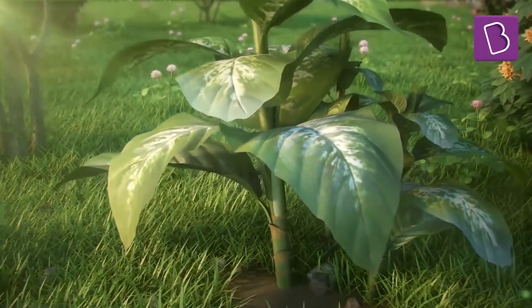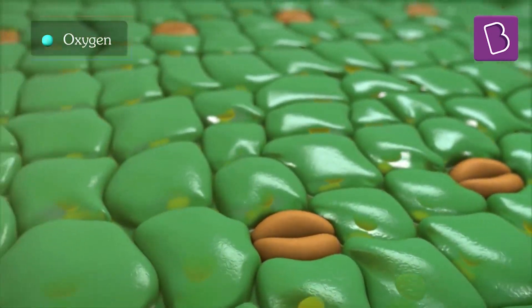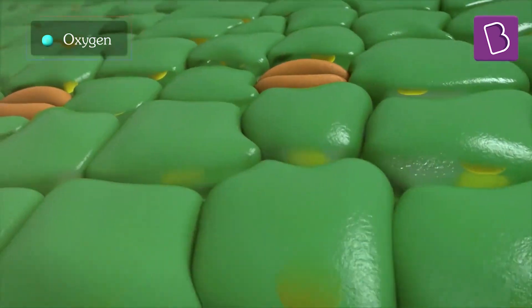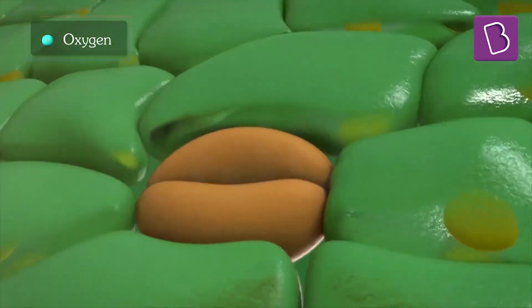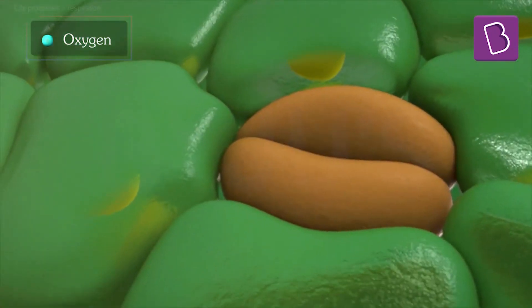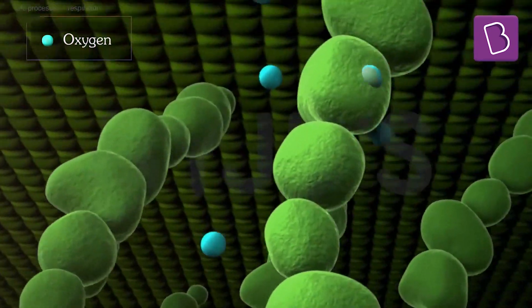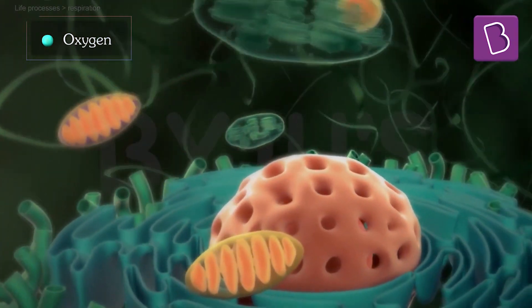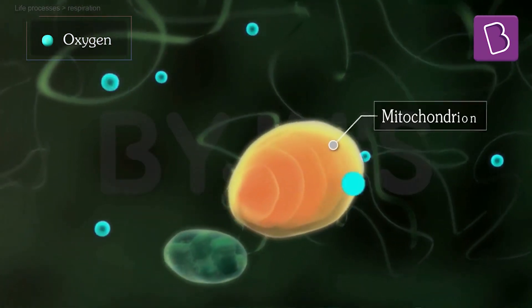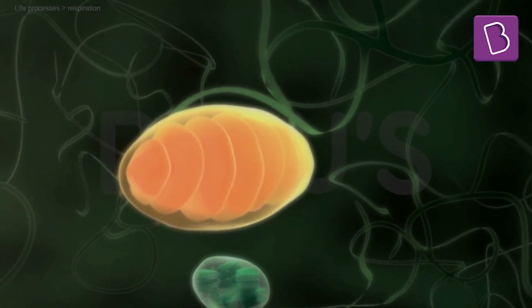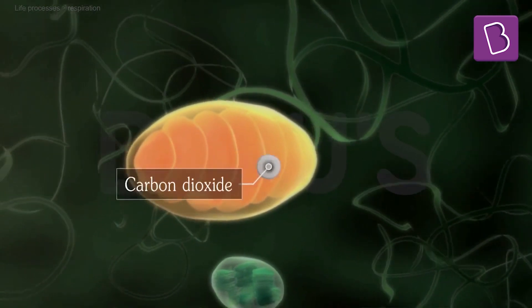Diffusion is in fact how gas exchange happens in all organisms, including plants. Take a look at this plant — all plants undergo the process of respiration. Upon taking a closer look, we find the surface of the leaf possesses pores called stomata, which act as an opening. At night, the plant uses oxygen and gives out carbon dioxide. The gases diffuse into the air spaces in the leaf and enter the cells inside. Inside this cell we find mitochondria, wherein the process of cellular respiration takes place in all complex organisms, resulting in the expulsion of carbon dioxide as a waste product.